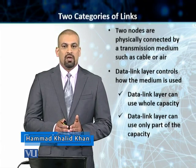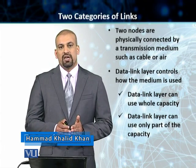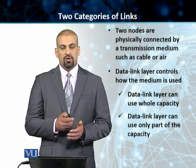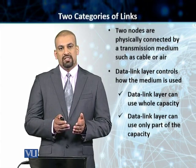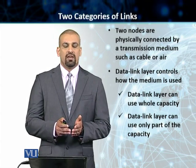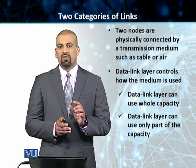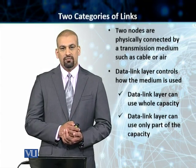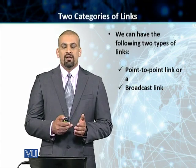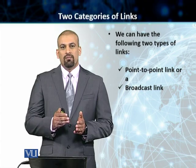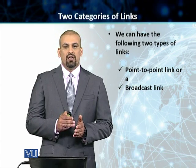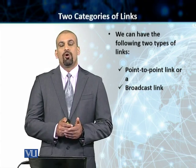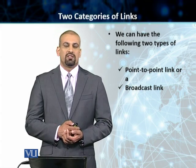There are two options. Either the data link layer is going to decide that this is going to be a dedicated link, which is going to be used just for the two parties to communicate, or it's going to decide that it's not going to use the full capacity of the link and it's only going to use a little bit of the capacity and allow other resources to use the same link as well. So the data link layer categorizes the link into two different link types: the first one is a point-to-point link, and the second one is a broadcast link.